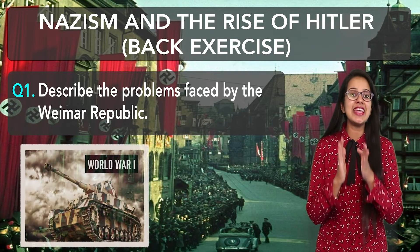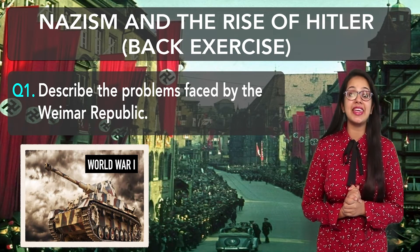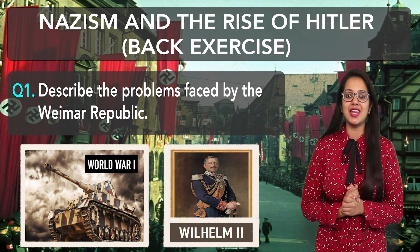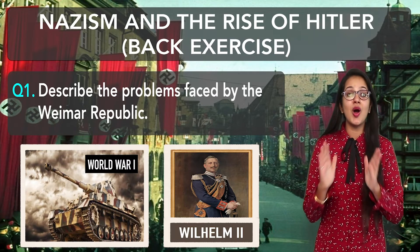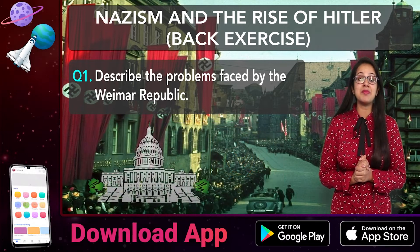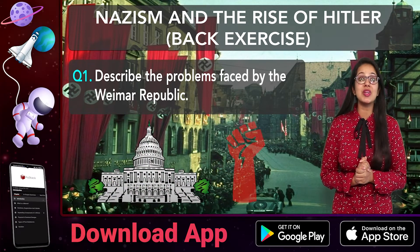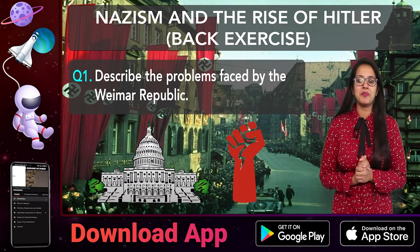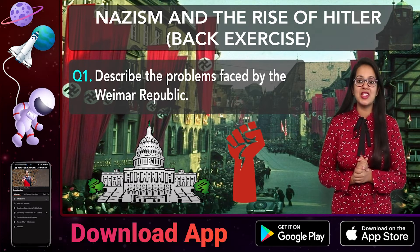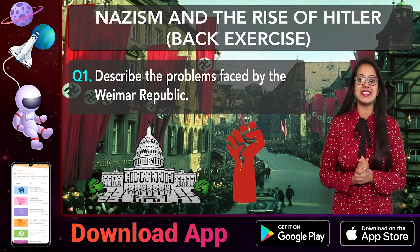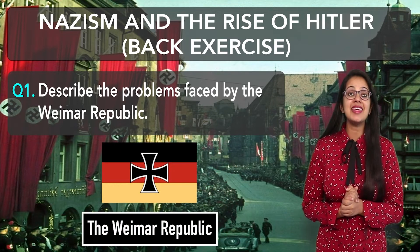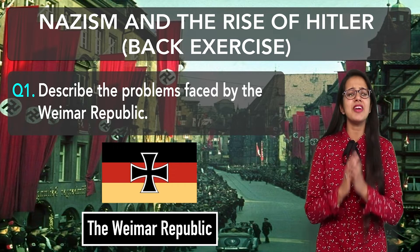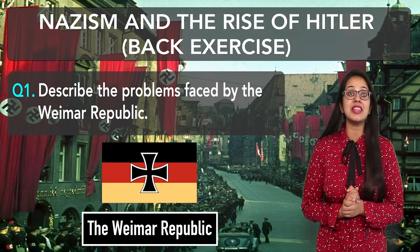In 1918, because of World War I, William II, who was the king of Germany, left his throne. Due to these situations, the parliamentary parties in Germany had a chance to establish a democratic role. A meeting was called in Weimar, where the National Assembly made a democratic constitution. The German Parliament, or the Reichstag, deputies were elected by universal adult franchise. The women's votes were also considered.